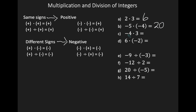Let's look at C: negative 4 times 3. My signs are different, which means my answer will be negative, and 4 times 3 is 12, so the answer is negative 12. Let's look at D: 6 times negative 2. My signs are different — my 6 is positive, my 2 is negative — so my result is negative, and 6 times 2 is 12, giving negative 12.